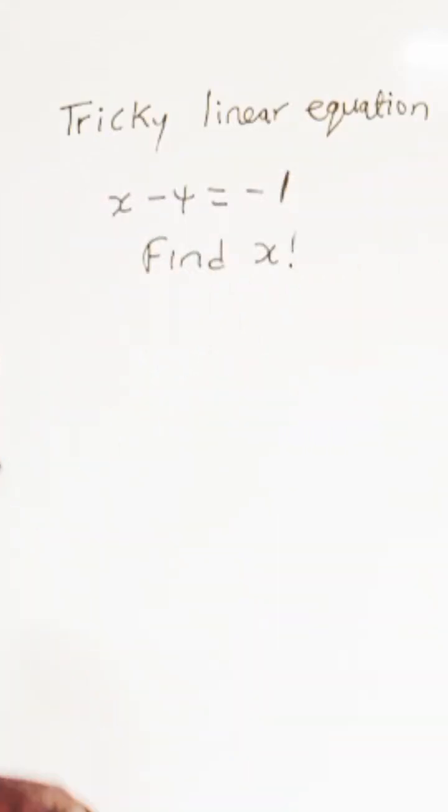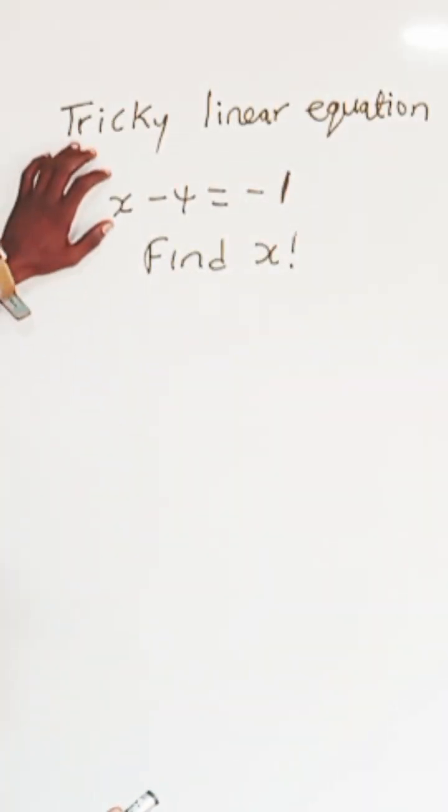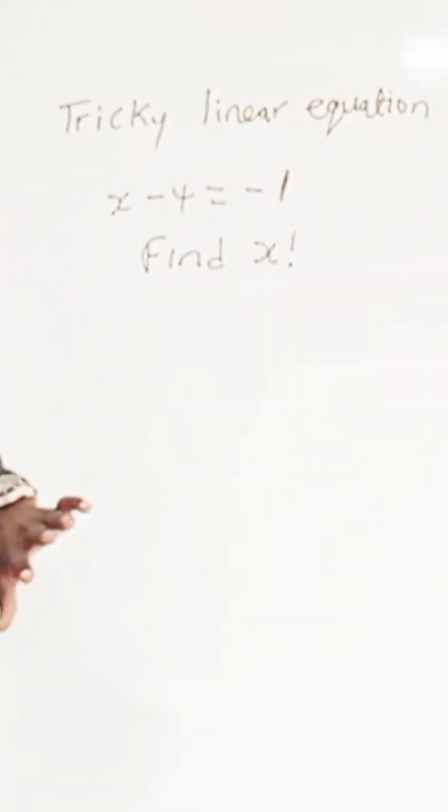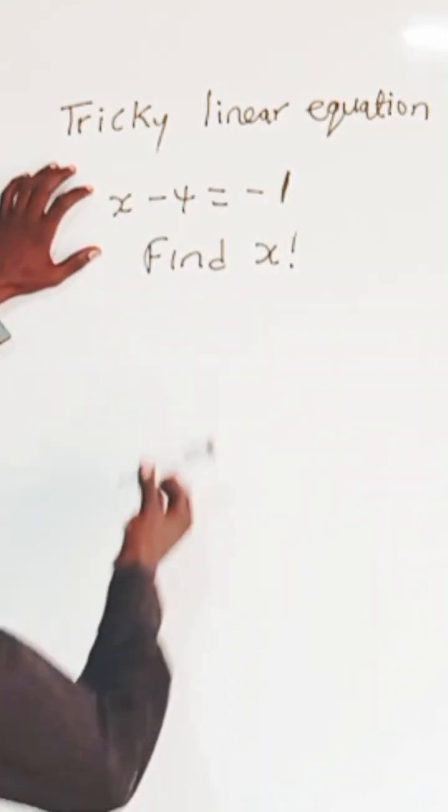When you have x minus 4 equals minus 1, moving the minus to the other side, it becomes plus. So you're going to add 4 to both sides to solve this linear equation.